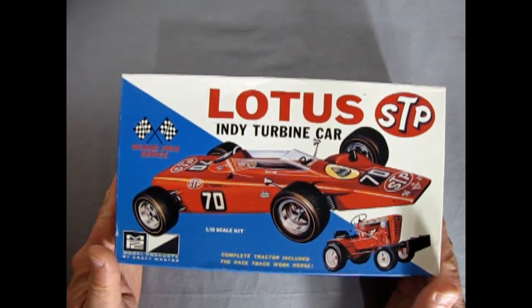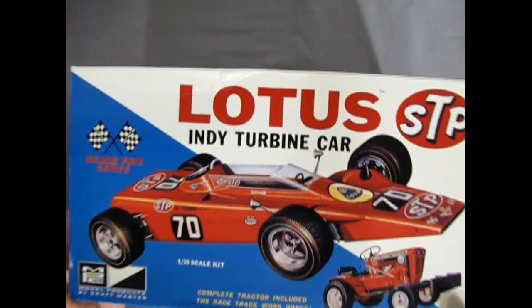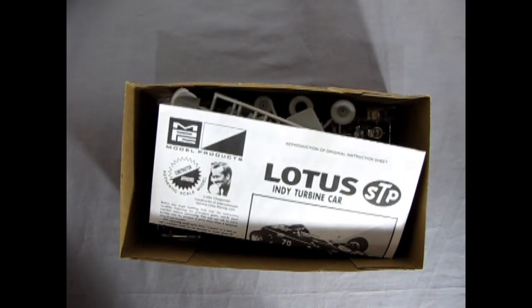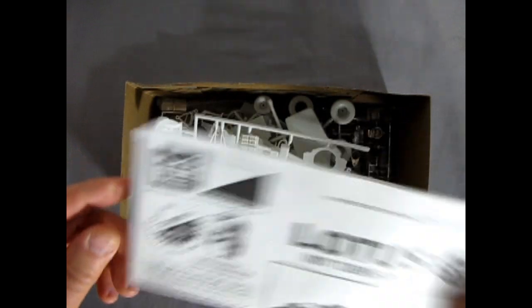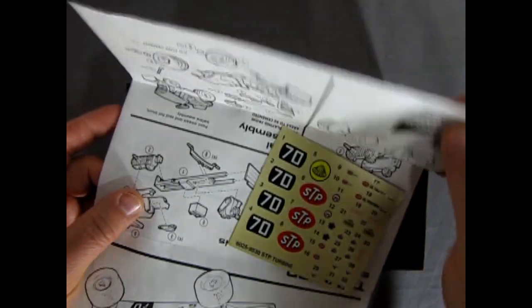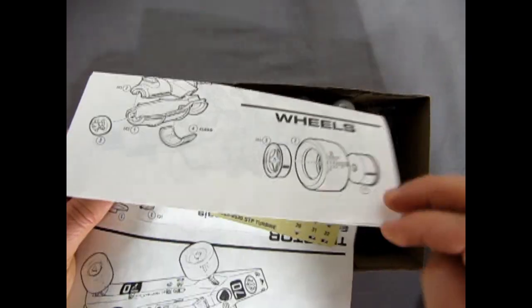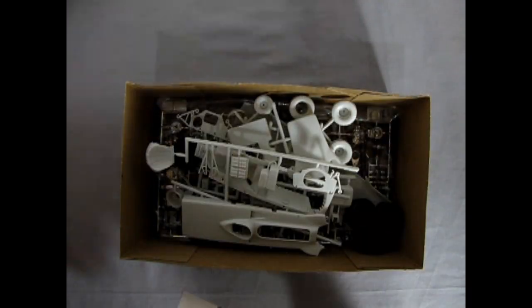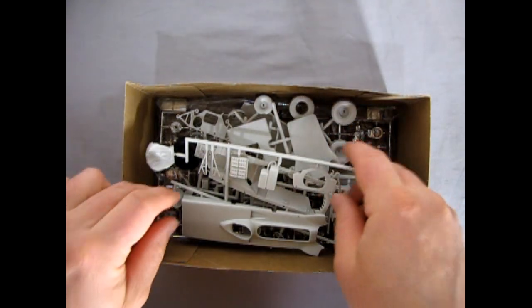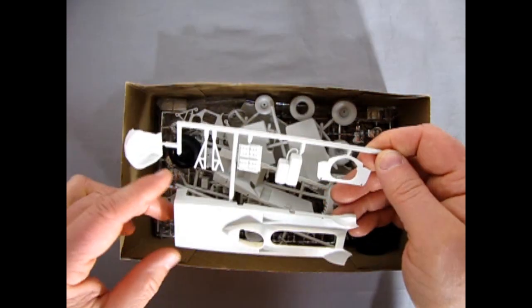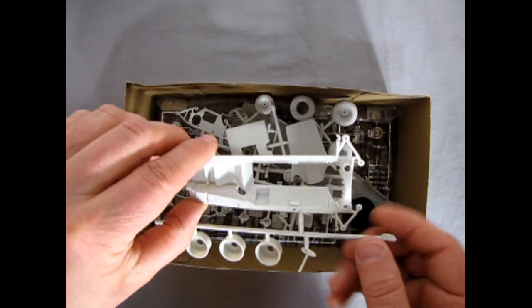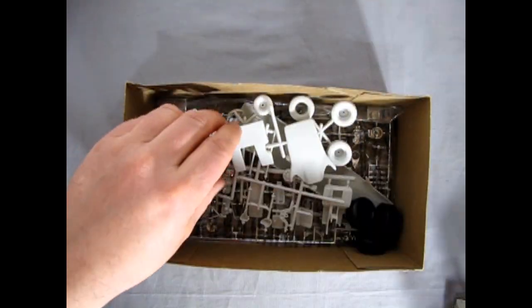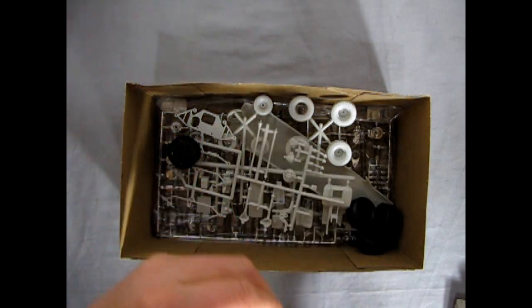So now let's just take the lid off and see what's underneath. And here of course we have our instruction sheet. There's that front wedge nose.